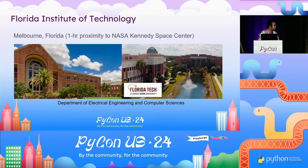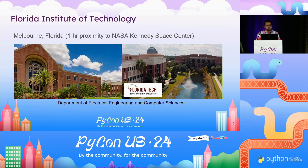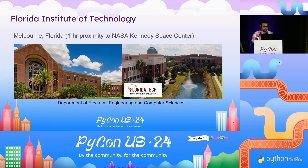A little bit about where I work. Florida Institute of Technology is located in Melbourne, Florida, which is on the east coast of Florida, the Space Coast. It's one hour close to the NASA Kennedy Space Center, so from the campus we usually see a lot of space flights going off. This is our department — the electrical engineering department on the left, and on the right you have the computer sciences building at Florida Tech.